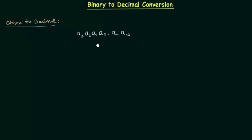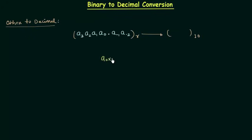The integer part of the number is a0, a1, a2, a3 and the fractional part is a-1, a-2. Let's say the number is having base r and we want the decimal equivalent of this number. We have to multiply a0 by r raised to power 0, where r is the base, and a1 by r raised to power 1.